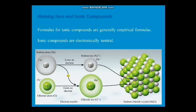Now let's proceed to the formulas for ionic compounds. Ionic compounds are generally empirical formulas. Take note, we have two types of formulas: molecular and empirical formulas. So for this, we have ionic compounds which are electronically neutral. From the word itself, neutral - they have zero charge.